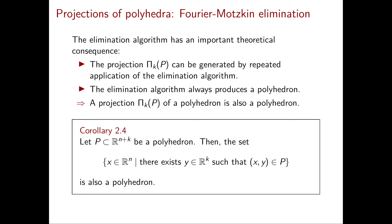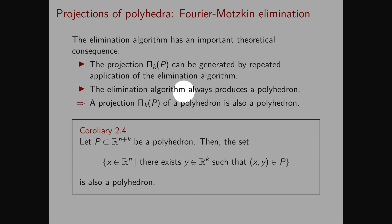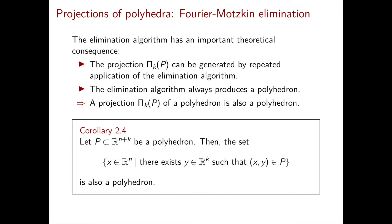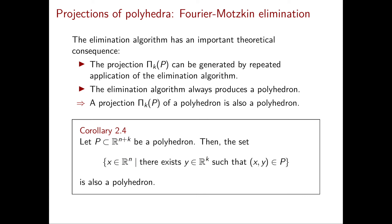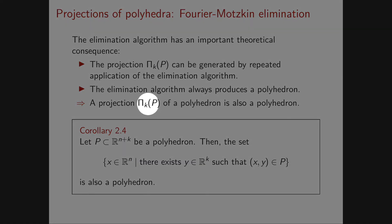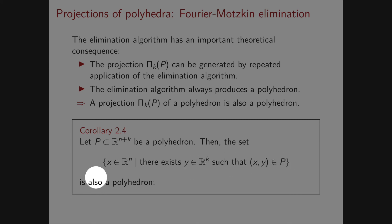It's not really the reason that we're studying such an elimination algorithm. The true reason we're studying it is because of its theoretical consequences. Note that the elimination algorithm always produces a polyhedron by construction, because the output is the polyhedron Q, which is defined by finitely many linear inequalities. Furthermore, any projection pi_k of P can be generated by repeated application of the elimination algorithm. These two facts together imply that for a polyhedron P, the projection pi_k of P is always a polyhedron for any k. Let P be a polyhedron in R^{n+k}. Then the projection onto Rn, which is the set of points in Rn for which there exists a y in Rk such that (x,y) is in P, is also a polyhedron.